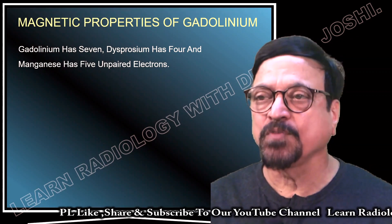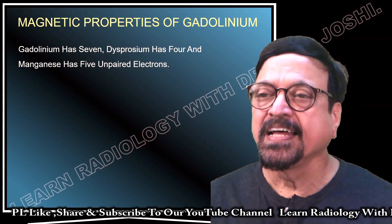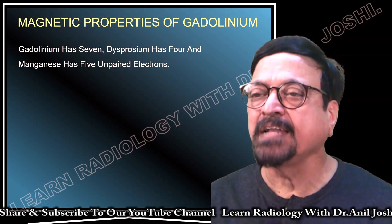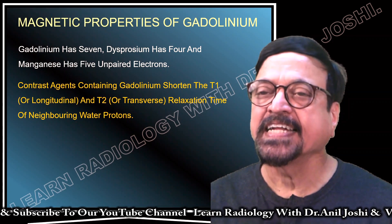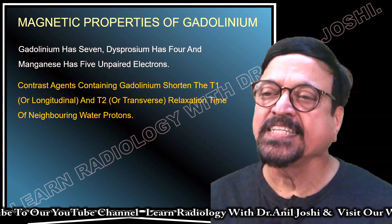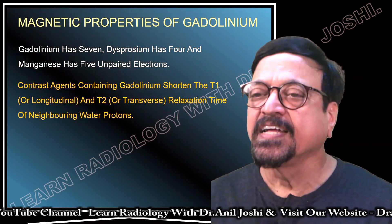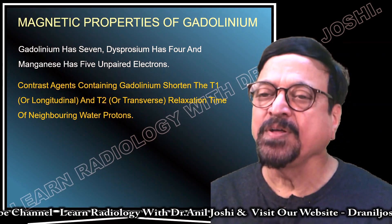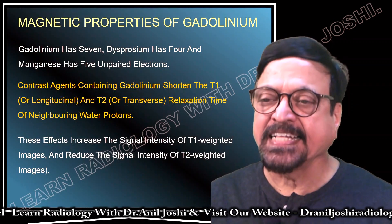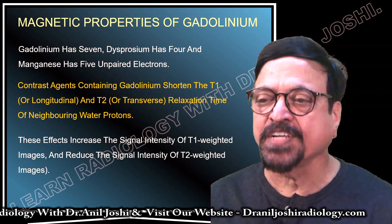Regarding magnetic properties: gadolinium has seven unpaired electrons, dysprosium has four, and manganese has five — so gadolinium has the maximum. Contrast agents containing gadolinium shorten both T1 (longitudinal) and T2 (transverse) relaxation times of neighboring water protons. This increases signal intensity on T1-weighted images and reduces signal intensity on T2-weighted images.